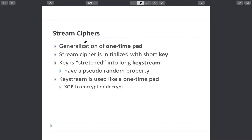The basic characteristic of a stream cipher is that it is initialized with a short key. When you start off with encryption in the stream cipher, you have only a short key, and this short key is stretched to make it into a key stream. The stretching process involves some kind of pseudo random generation in order to stretch that short key into a key stream. This key stream is then used like a one time pad — you perform an XOR with the plain text to generate the cipher text.